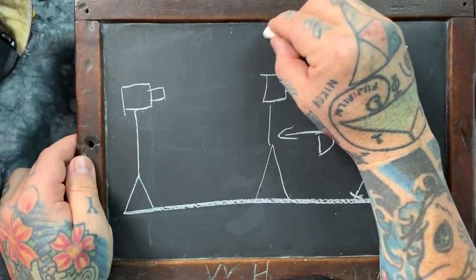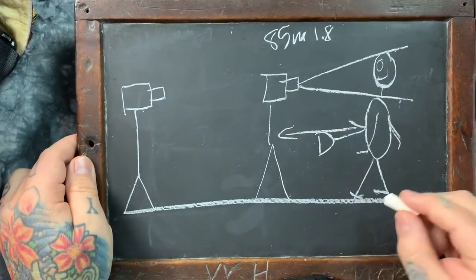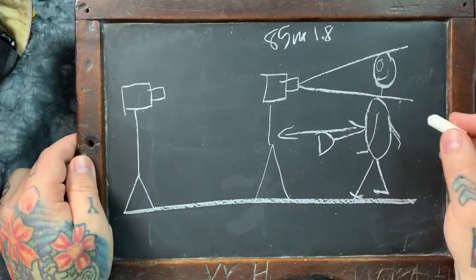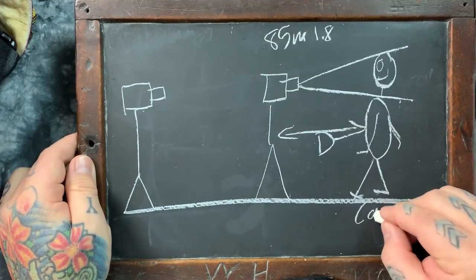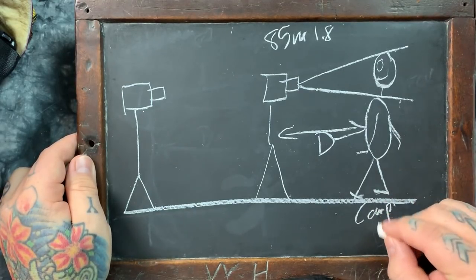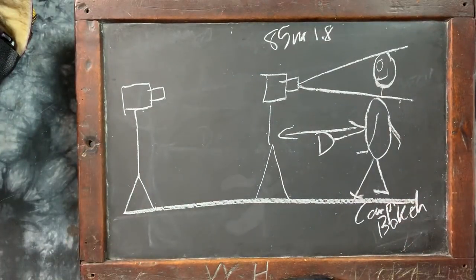And it's going to be an 85 millimeter f1.8, right? So at this distance with this field of view with an 85 millimeter f1.8 shot at f1.8, we have a given compression and a given bokeh, right? And of course there are differences in bokeh depending on the lens construction and whatnot.